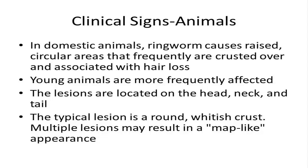Young animals are more frequently affected. The lesions are typically located on the head, neck, and tail. The typical lesion is a round, whitish crust. Multiple lesions may result in a map-like appearance as seen in the next slide.